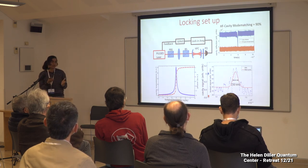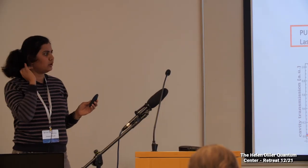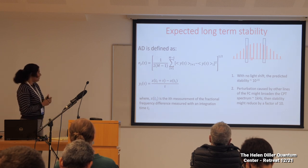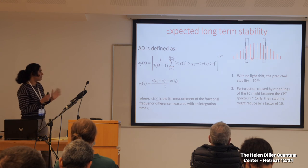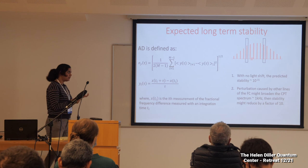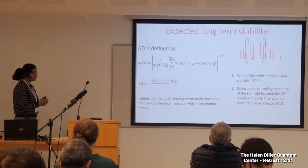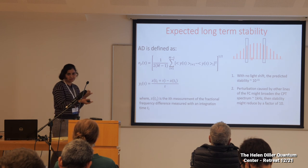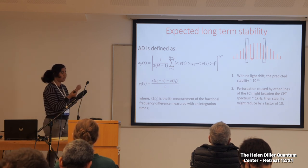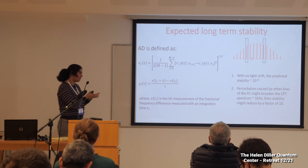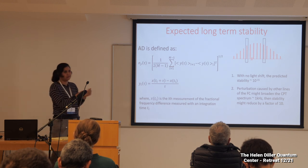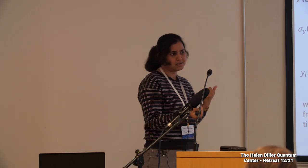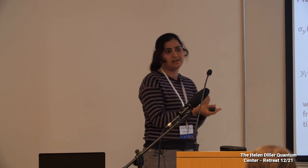With all these stable configurations, we are hoping to achieve a clock stability of 10 to the power minus 15. However, since the comb has many lines, there might be perturbations caused by other lines due to light shifts, as they are very close in frequency — separated by only 250 megahertz. We expect they might broaden the CPT spectrum, which could reduce stability by a factor of 10, but this needs to be tested. There are also methods in the literature to compensate for that. Right now we are in the development process — we have just managed to stabilize our second laser and are now looking for the CPT signal.